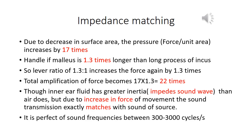The next step of impedance matching: due to the decrease in surface area, the force energy or pressure increases by 17 times. Additionally, the handle of the malleus is 1.3 times longer than the long process of the incus, which again increases the force by 1.3 times. Multiplying 17 by 1.3 gives 22 times. This 22 times pressure helps to move sound through the fluid inside the cochlea, matched with what is present in the atmospheric air — that is why it is called impedance matching.